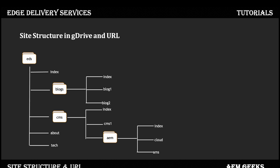How do these documents map to URLs? When you hit the main domain — say domain.com — it maps to this repository and will always render the root index page. You're not specifying this anywhere; it's the standard. To access another page at the same level, for example the 'tech' page, you access it as domain.com/tech.